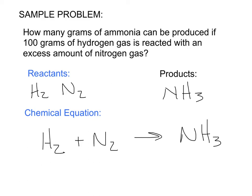I have written down my reactants, I have predicted my product, and I'll write down that I have 100 grams of hydrogen gas. Sometimes I'll write a question mark over the product to indicate which quantity I'm predicting and what unit they are looking for — so here I'll write down grams.